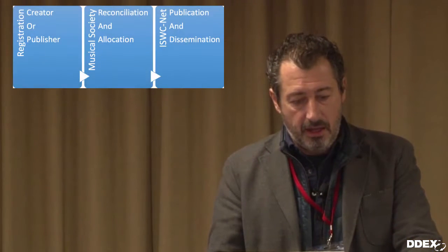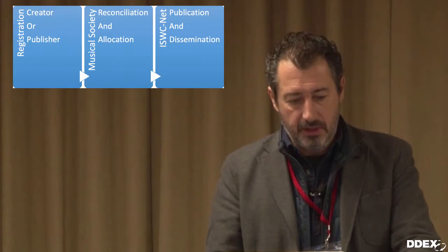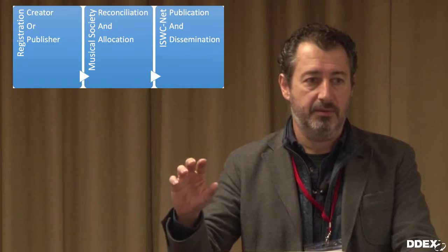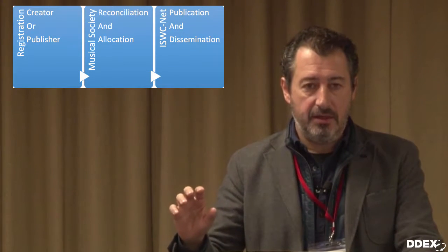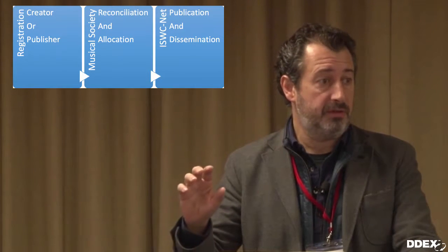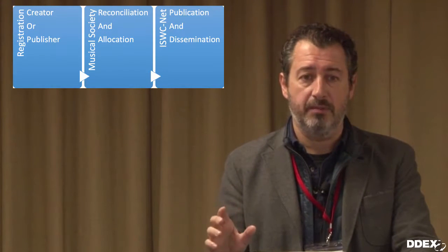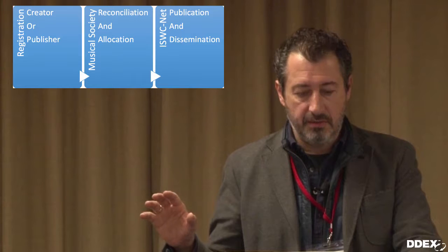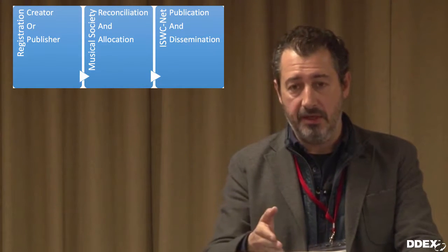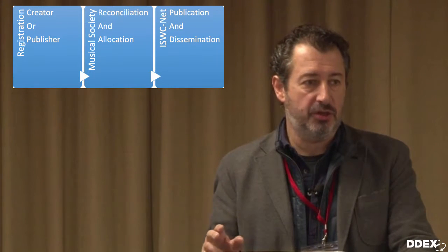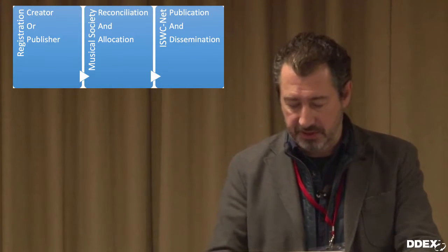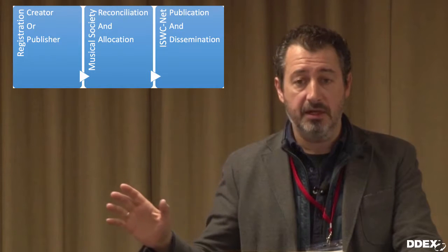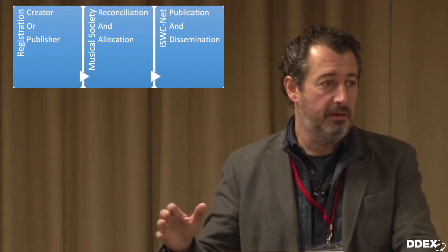Typically, ISWC assignment happens at the time of registration. An individual writer registers the work with the CMO or registration agency, or a publisher sends information by electronic means such as CWR files. The registration agency assigns an ISWC based on the rules explained, with possible reconciliation against other registers. When assigned, the information is uploaded to ISWCnet, published, and disseminated.